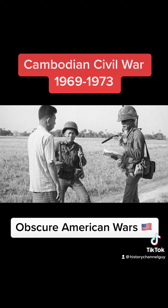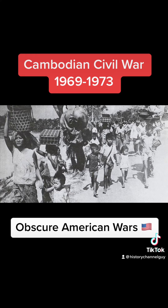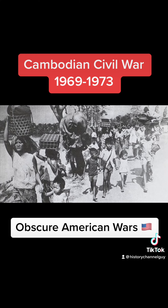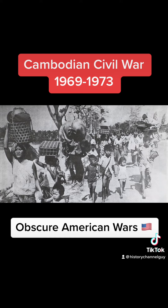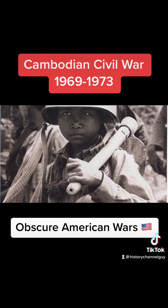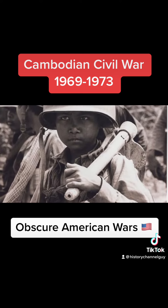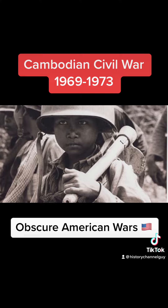In 1970, Prince Sihanouk was overthrown in a coup by General Lon Nol, who then formed the pro-U.S. government. The U.S. continued to support Lon Nol's government until 1973, when Congress passed the Case-Church Amendment, which prohibited any further military intervention in Cambodia.